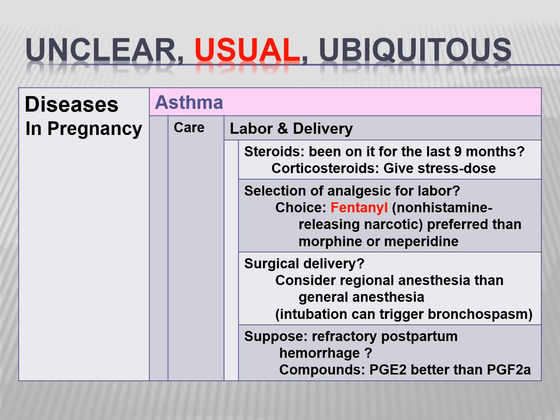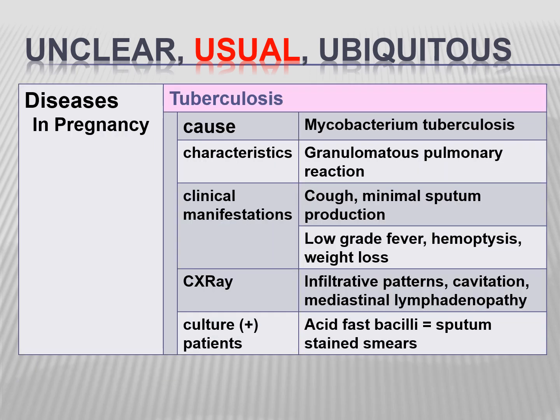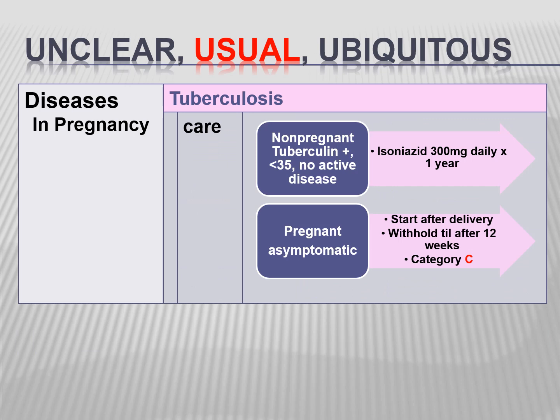Tuberculosis — in an endemic country like the Philippines and India, TB must be considered especially in pregnancy. It is characterized by a granulomatous pulmonary reaction. Clinical manifestations include cough, minimal sputum production, low-grade fever, hemoptysis, and weight loss. Chest X-ray shows cavitation, lymphadenopathy, and infiltrative patterns. AFB sputum stains confirm the diagnosis. For non-pregnant tuberculin-positive patients with no active disease, give INH daily for one year.